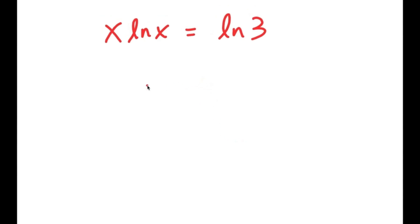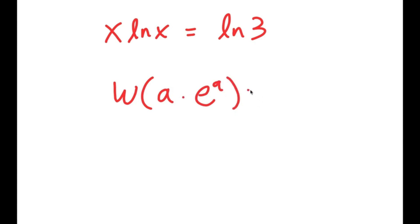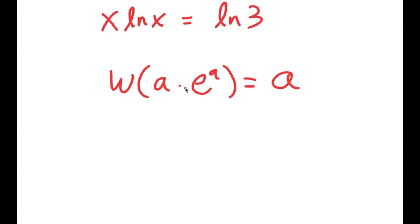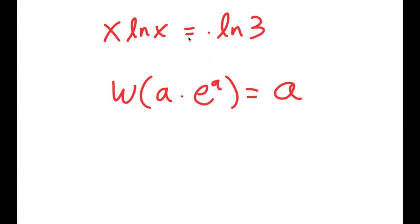Now I'm going to use an important formula called the Lambert W formula. It states that if I take W of something in the form a times e to the power of a, then this is equal to a. So this is the Lambert W formula. I'm going to rewrite x times ln x so that it suits the Lambert W formula — specifically in the form a times e to the power of a.